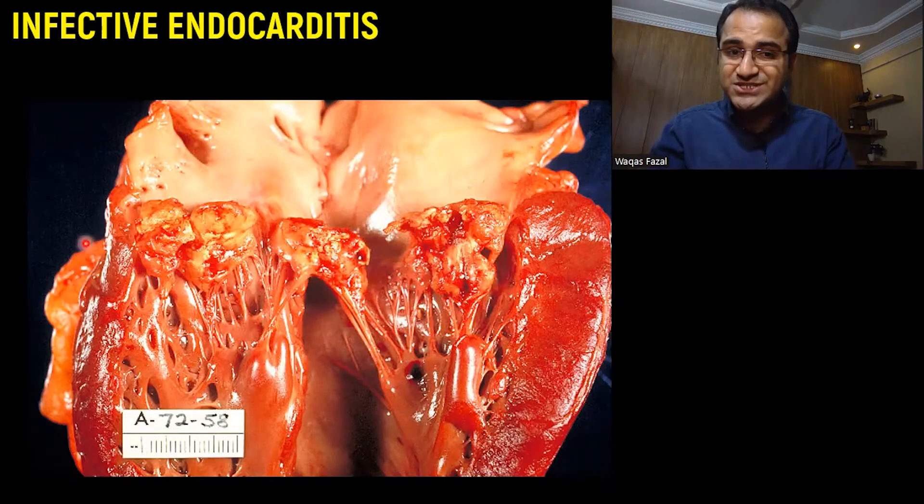For exam purposes: if they ask the most accurate test, choose transesophageal echocardiography; if they ask the best initial test, choose transthoracic echocardiography. In real life, TTE is performed most of the time, and in very specific cases you go for TEE.